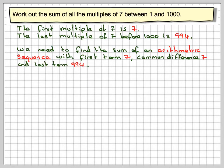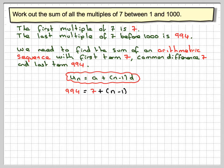So we need to know which number term this one is. You could actually just divide it by 7, but if we use the formula for finding any term in an arithmetic sequence, which is un equals a plus n minus 1 times d, and you have to remember this one for IGCSE, then we know that 994 will be equal to the first term 7 plus n minus 1 times the common difference, which is 7.